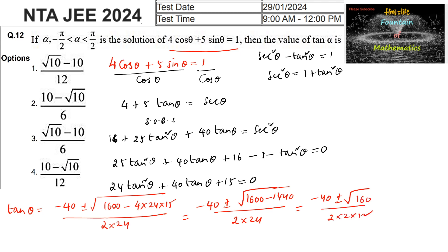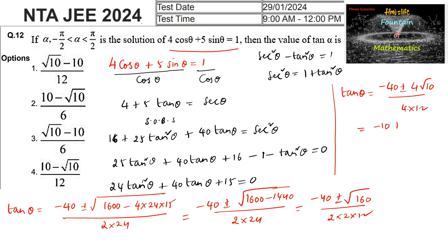So tanθ = (−40 ± √160) / (2×24). Since √160 = 4√10, this gives tanθ = (−40 ± 4√10) / 48, which simplifies to (−10 ± √10) / 12.